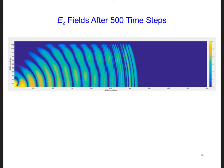Here are the EZ fields I got after 500 time steps. First, we can see that the amplitude of the fields appear to be diminishing to 0 by the time they reach the reflection height of the ionosphere.